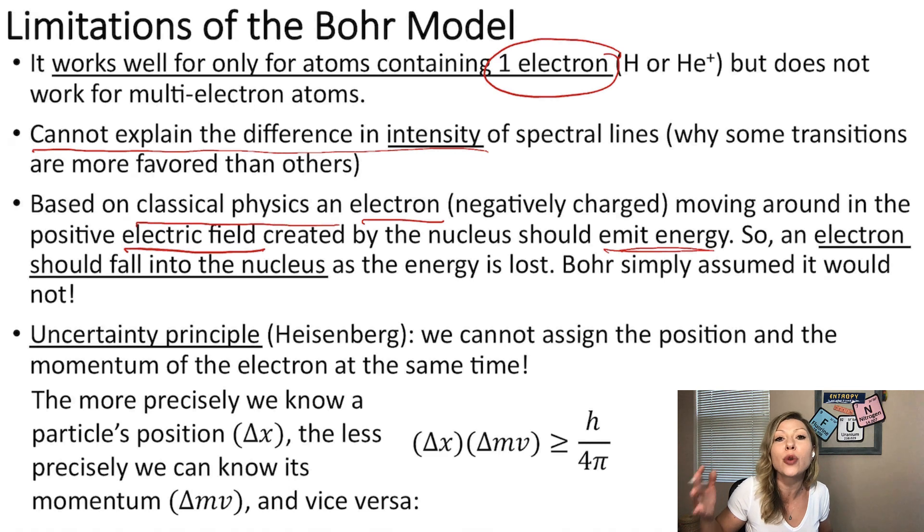On top of that, Bohr's model wouldn't work with the famous uncertainty principle devised by Heisenberg. So he said that we cannot assign the position and the momentum of the electron at the same time. This means basically that if we know how fast the electron is going, we don't know where it is, and vice versa.